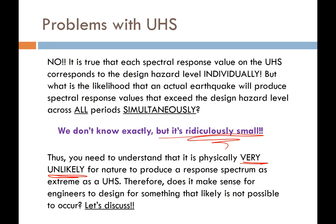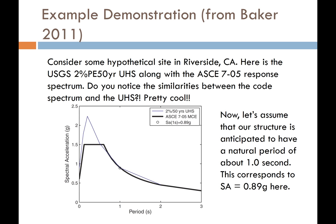We need to understand that it's physically very unlikely for nature to produce a response spectrum as extreme as the uniform hazard spectrum. It doesn't make sense for engineers to use the uniform hazard spectrum to design their buildings to — frankly, we're designing for an earthquake that isn't really going to occur. To demonstrate this, Professor Jack Baker at Stanford University did some groundbreaking work with his PhD studies with the late Professor Alan Cornell to talk about and demonstrate this concept.